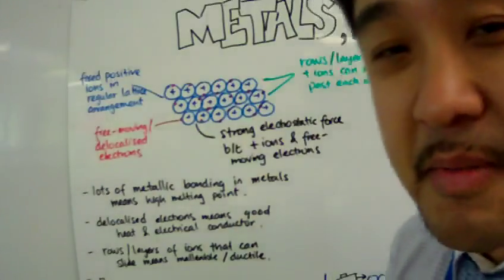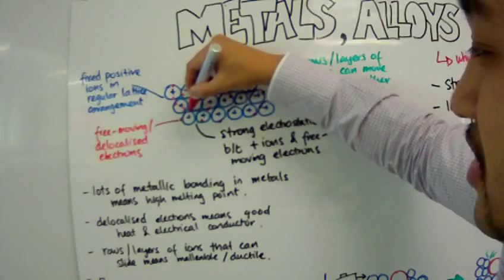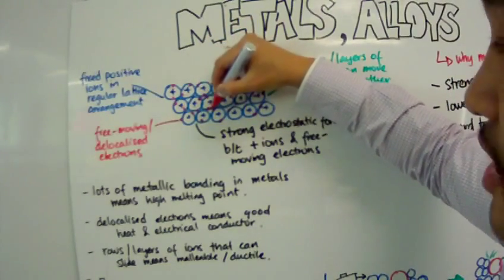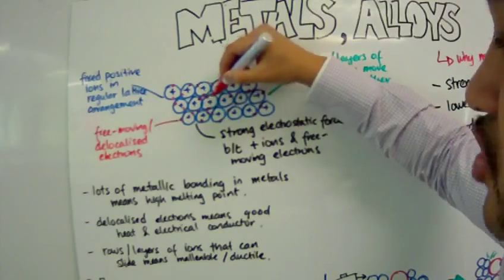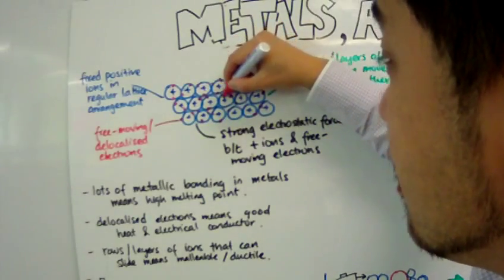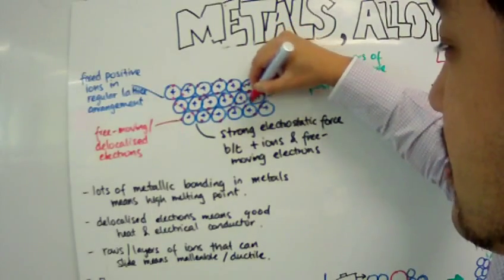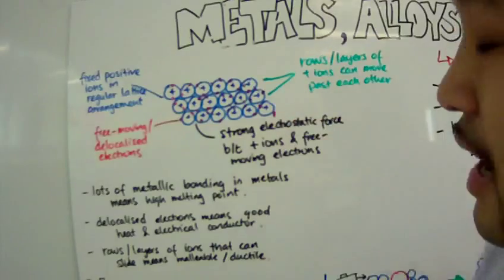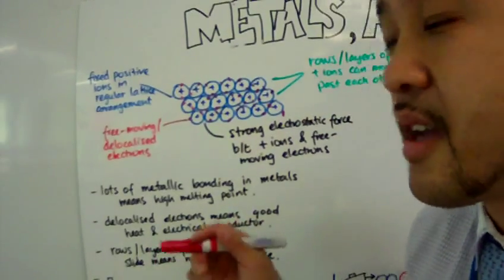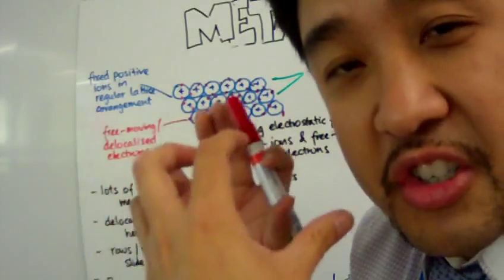Let me draw more electrons in there. When I fill in the electrons, I'm not drawing them in any particular order — it's random. On average, I have two delocalized electrons for every positive ion, and that means a stronger electrostatic force.